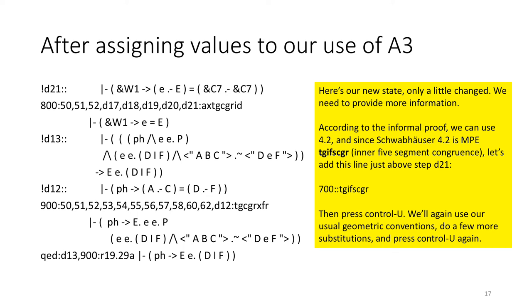According to the informal proof, we can use 4.2. And since Schwabhauser 4.2 is MPE TGIFSCGR, inner five segment congruence, let's add this line just above step D21. Then we'll press CTRL-U. We'll again use our usual geometric conventions to form our substitutions. Press CTRL-U again.